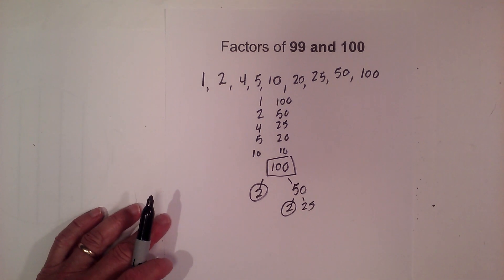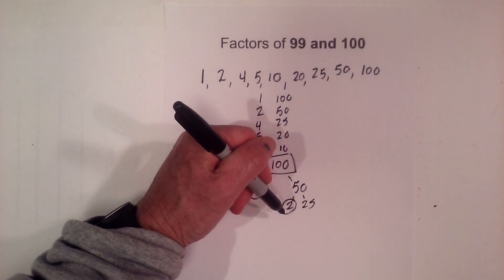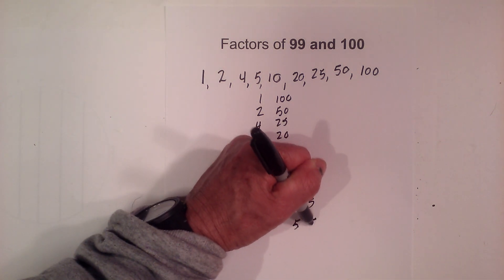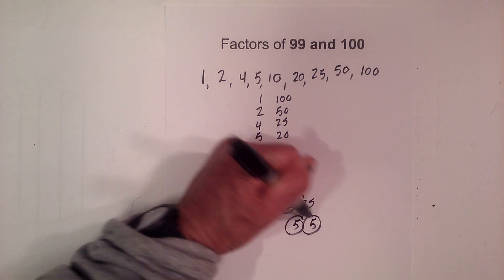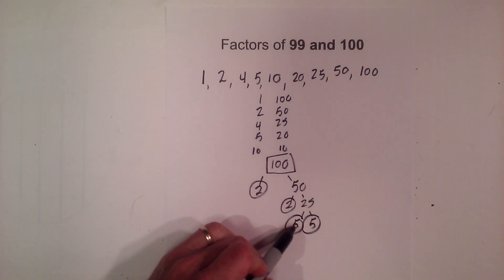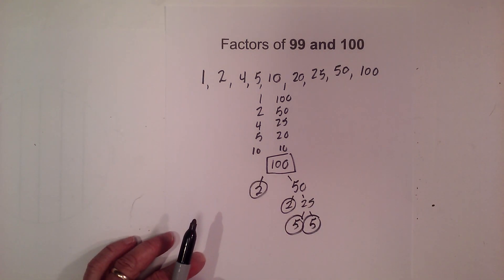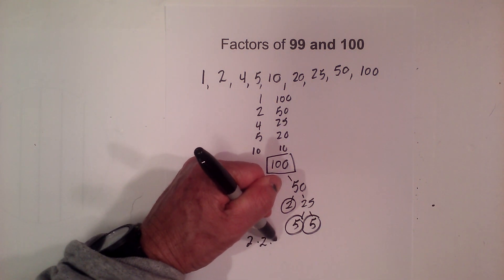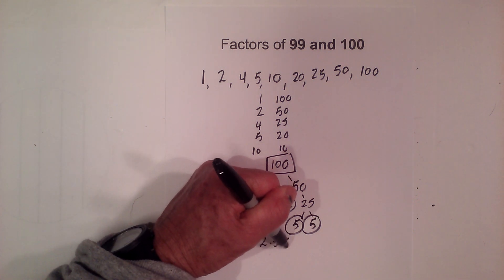And then I think for 25 is 5 times 5, circle both fives. I'm now down to prime numbers so I'm finished. So the prime numbers are 2 times 2 times 5 times 5 or